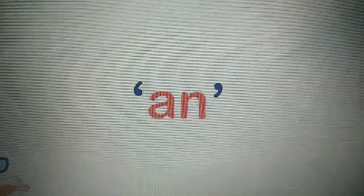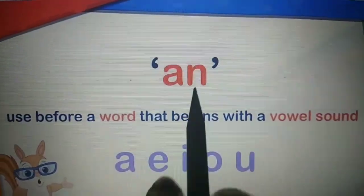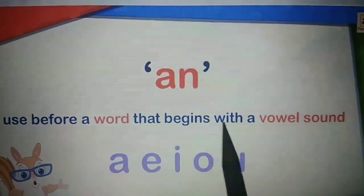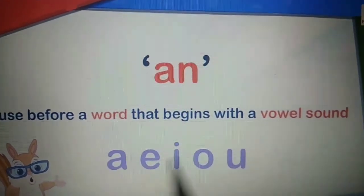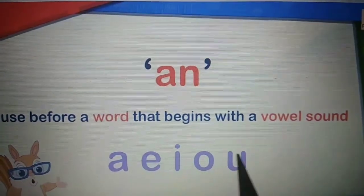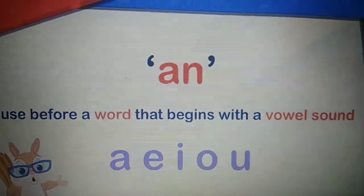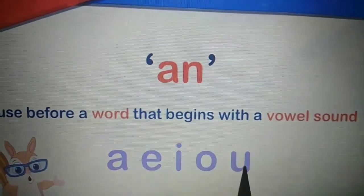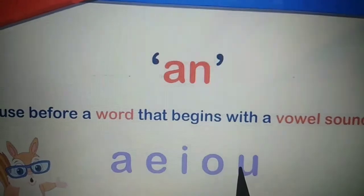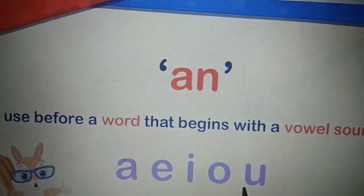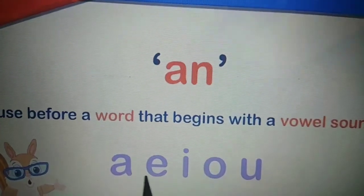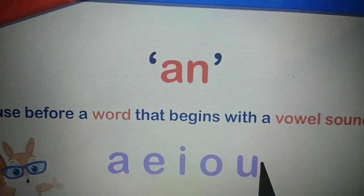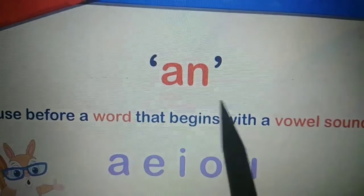Now let us understand AN. AN is used before a word that begins with a vowel sound — A, E, I, O, U. All of you know that vowel alphabets are A, E, I, O, U. So before words which begin with vowel letters A, E, I, O, U, we use AN.